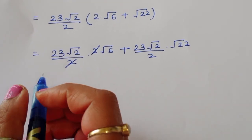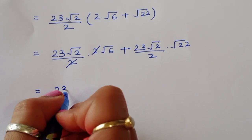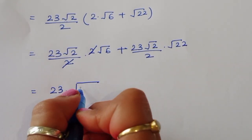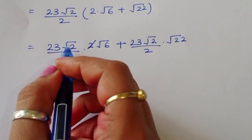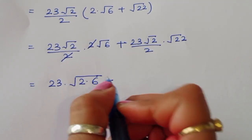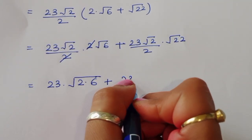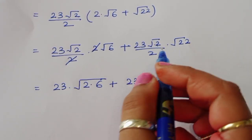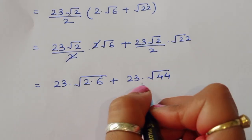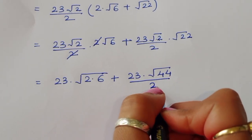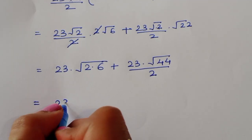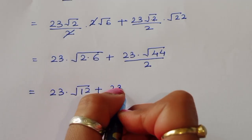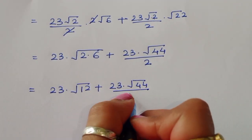Multiplying out: 23 times √2 times 2√6 plus 23 times √2 times √22, divided by 2. This gives 23 times √12 plus 23 times √44, divided by 2. Since 2 times 6 equals 12 and 2 times 22 equals 44.